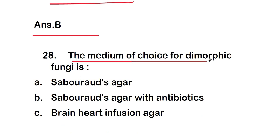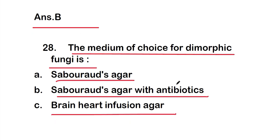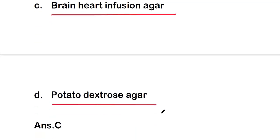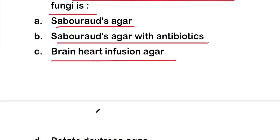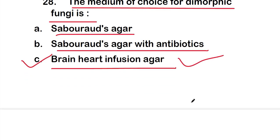Question 28: The medium of choice for dimorphic fungi is option A - Sabouraud's agar, option B - Sabouraud's agar with antibiotics, option C - brain heart infusion agar, or option D - potato dextrose agar. The right answer is option C, brain heart infusion agar, which is the medium of choice for dimorphic fungi.